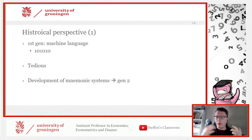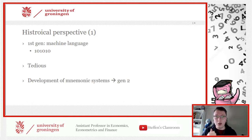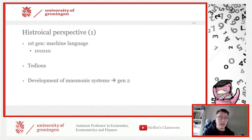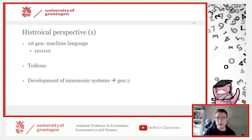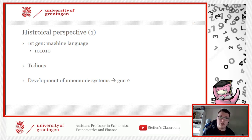Starting with machine language: when programming languages began, we started with binary — ones and zeros. This is incredibly tedious to write. This was denoted as the first generation of programming languages. These concepts were input into machines constructed of gears. This led to the development of what was known as generation two languages.